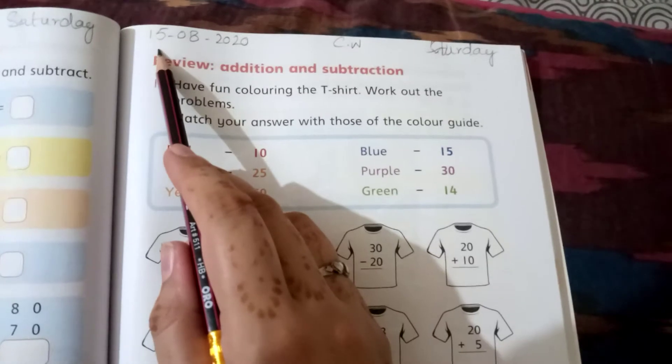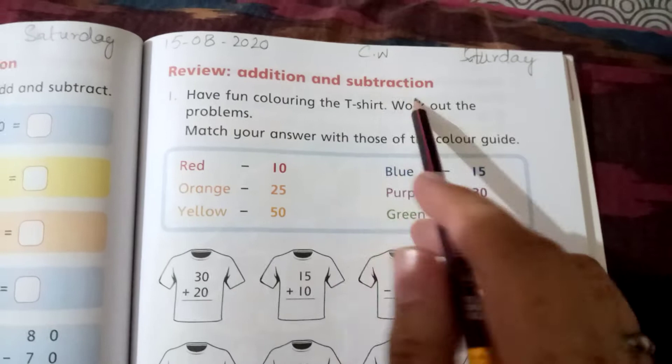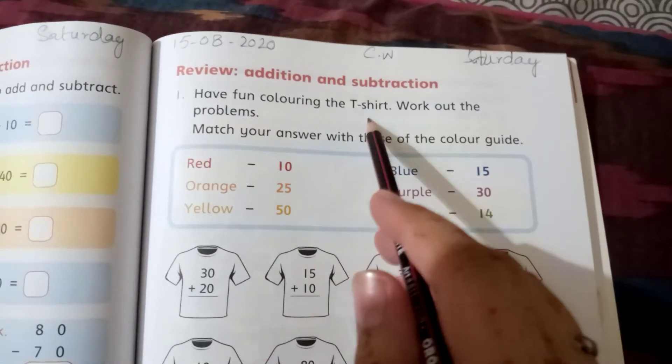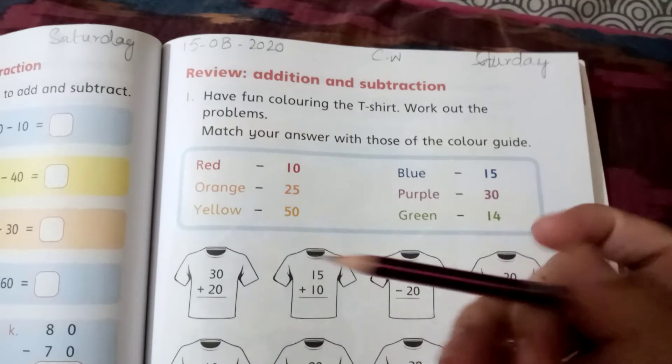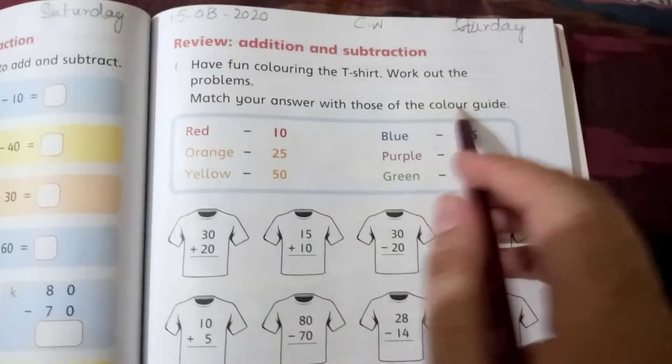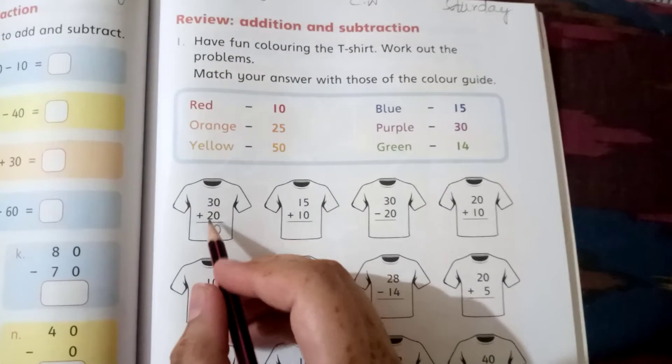Here is the date, you have to write date 15-8-2020, classwork, and Saturday. Addition and subtraction. What you will do here: have fun coloring the t-shirts. Work out the problems, match your answer with those of the color guide. 0 plus 0 equals 0. Add them first and subtract.